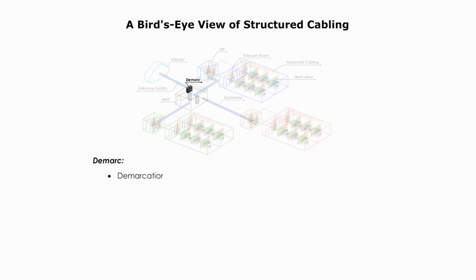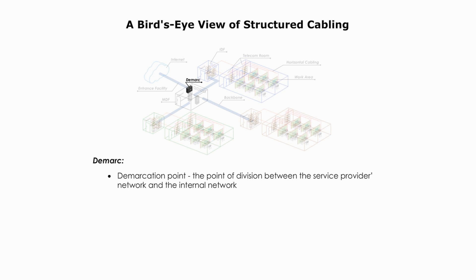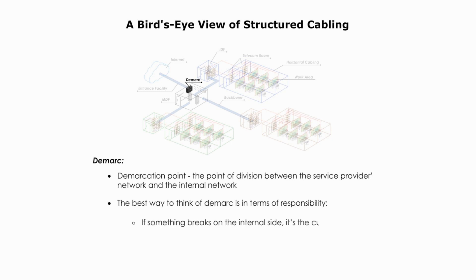DMARC stands for demarcation point — the point of division between the service provider's network and the internal network. The best way to think of DMARC is in terms of responsibility. If something breaks on the internal side, it is the customer's problem. Beyond the DMARC is the service provider's problem.